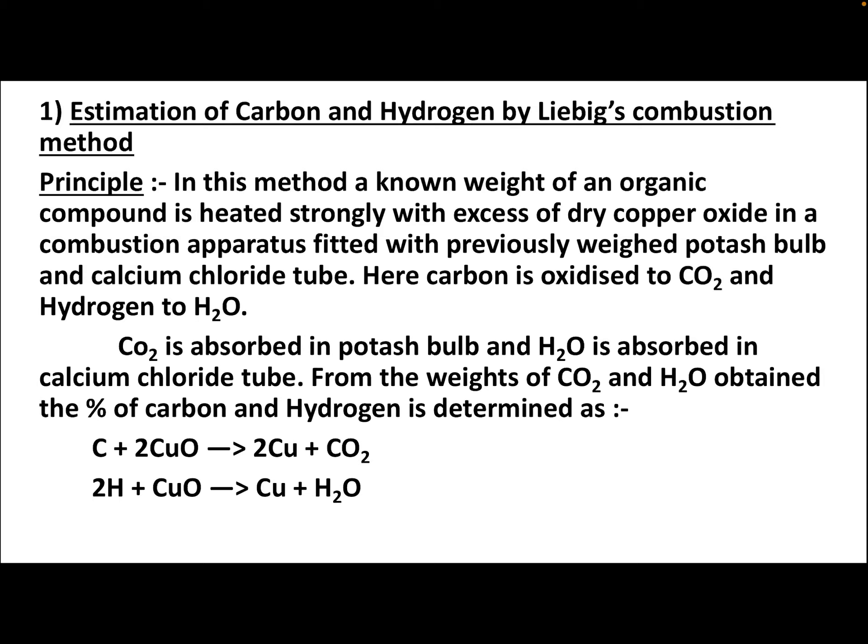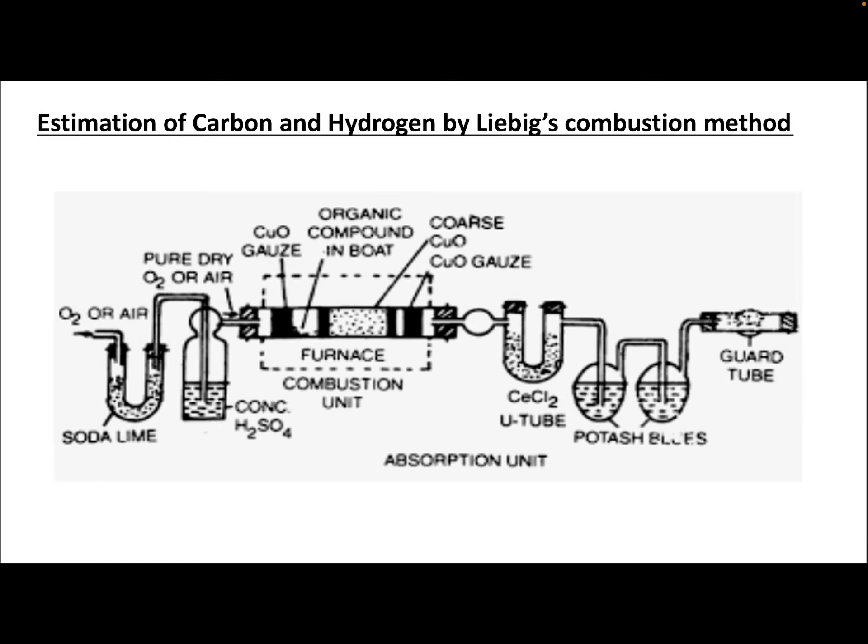CO₂ is absorbed in the potash bulb and H₂O is absorbed in the calcium chloride tube. From the weights of CO₂ and H₂O obtained, the percentage of carbon and hydrogen is determined. The reactions are: C + CuO → Cu + CO₂, and H₂ + CuO → Cu + H₂O.